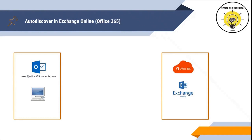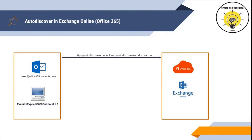Now let's understand the Autodiscover process when mailboxes are hosted in a fully Office 365 environment. Outlook will first check if the user principal name belongs to an Office 365 account. If it does, Outlook will try to retrieve the Autodiscover payload from the Office 365 endpoint: https://autodiscover-s.outlook.com/autodiscover/autodiscover.xml. However, if you have created a registry key on the client machine to exclude the explicit O365 endpoint, Outlook will not connect to this URL and will follow the next lookup process, which is the root domain.